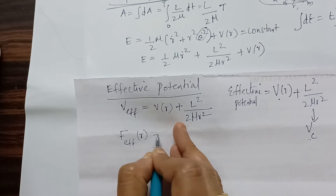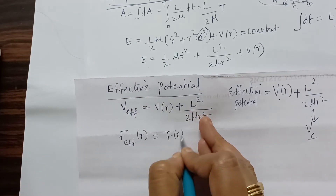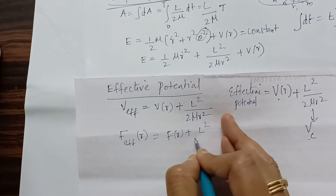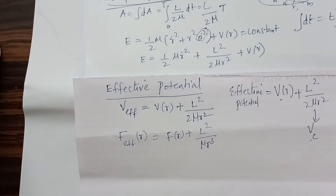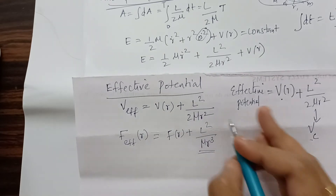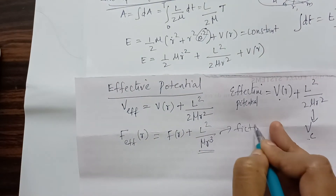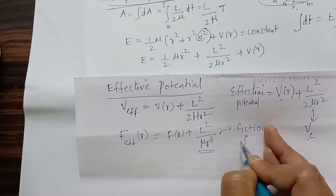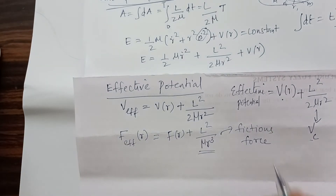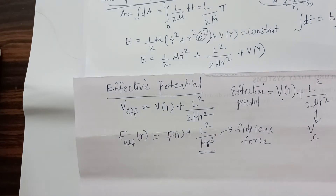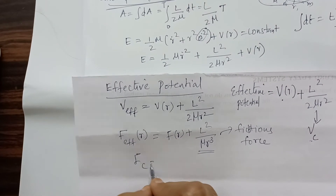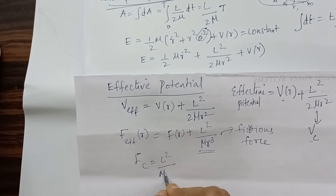The effective force F_effective, with respect to R, is F(R) + L² / (μr³). This additional term L² / (μr³) arises from the centrifugal potential.